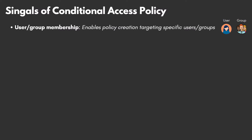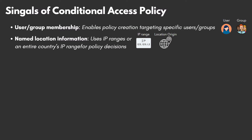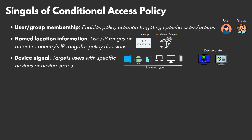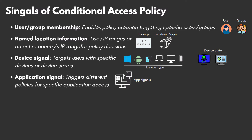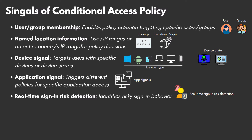The user or group signal allows the admin to create policies that target specific users and groups, providing fine-grained control over access to apps and data. Named location information can be created using IP address ranges and used when making policy decisions. Admins can even block or allow traffic from an entire country's IP range. The device signal allows the admin to create a policy targeting users with specific devices or devices in a specific state. Using the application signal, admins can ensure that users trying to access specific applications will trigger different Conditional Access Policies. Real-time sign-in risk detection allows a policy to identify risky sign-in behavior and force users to perform password changes or multi-factor authentication.